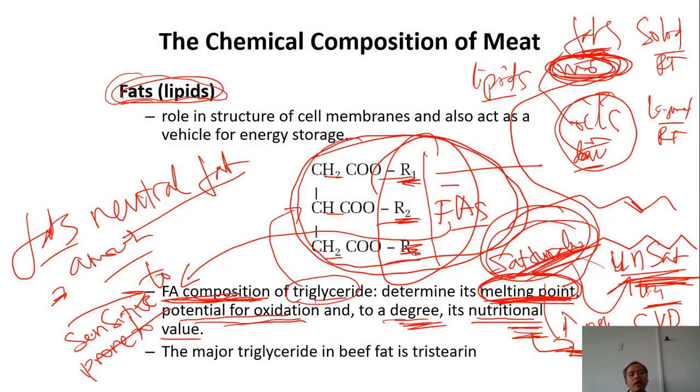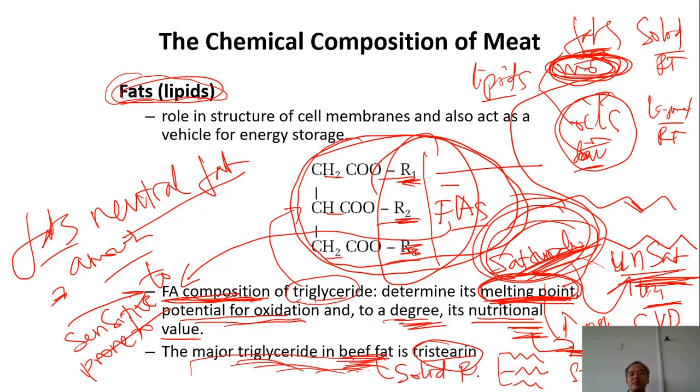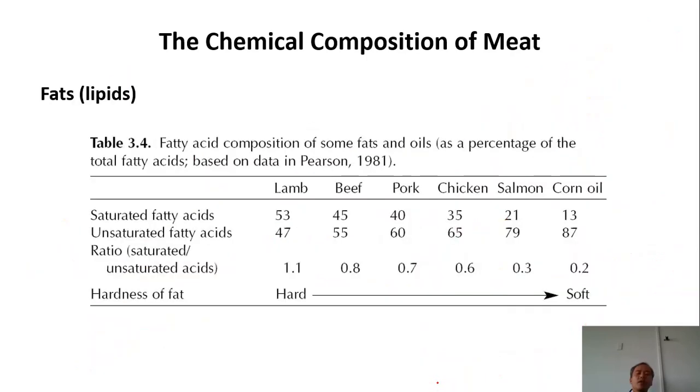Now, we go back here. The major triglyceride in beef fat is tristearin. Remember, beef fat, the major one, the main triglyceride in beef fat is tristearin. Tristearin means one glyceride with three stearic acid. Stearic acid has 18 carbon atoms but no double bond. No double bond means saturated, means solid. So the fat from cow, the beef fat is quite solid at room temperature because it's saturated.